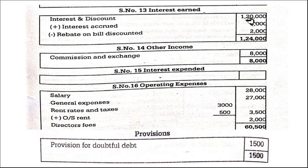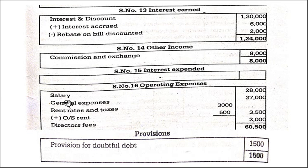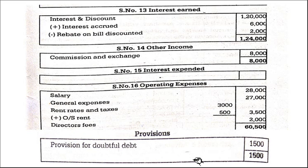Schedule 13, interest earned: interest and discount 1,20,000, and interest accrued — less rebate. Schedule 14, other income: commission 8,000. Interest expended — not there. Operating expenses Schedule 16: salary, general expenses, rent and outstanding rent, director's fees. Provisions: provision for doubtful debts 1,500.